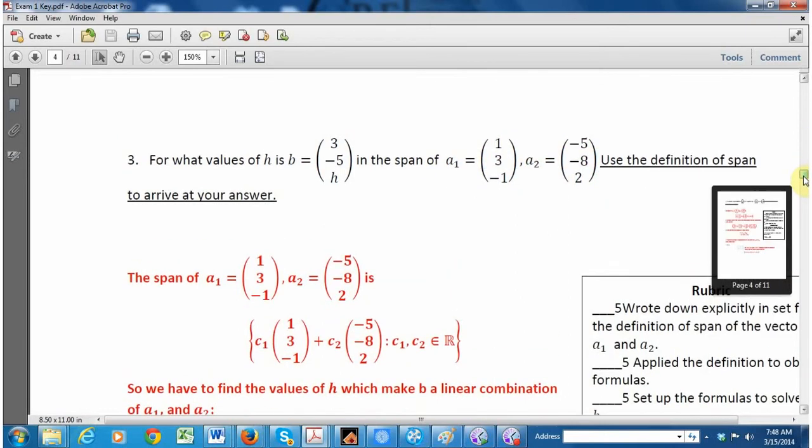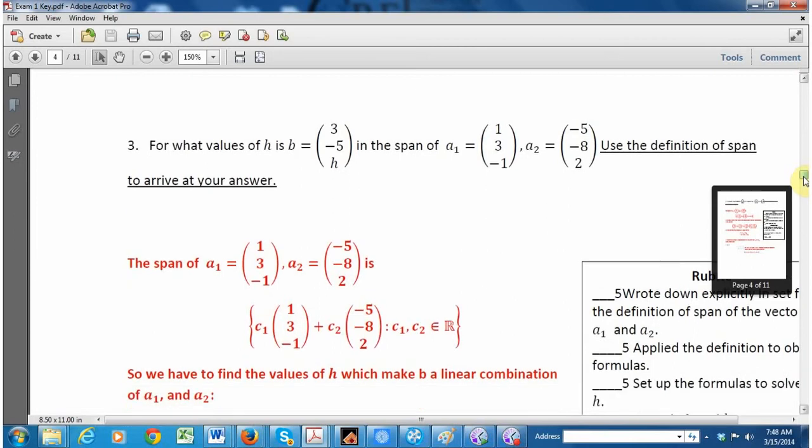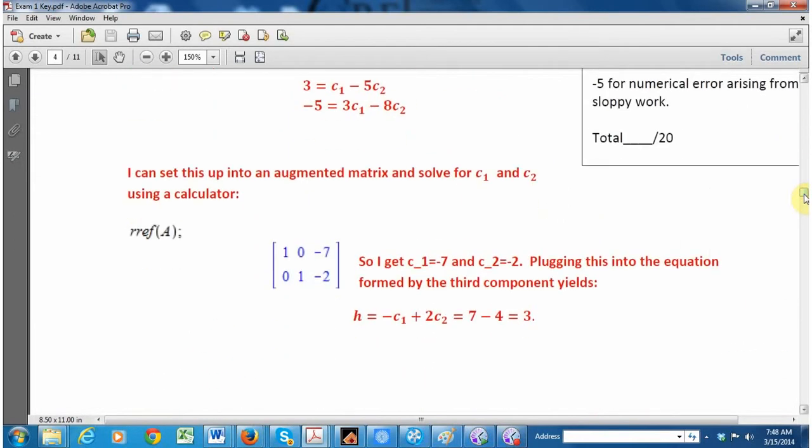One way you could do this problem is to memorize from the back of the book that you have to make a matrix like the following one down below and row reduce it, or actually come up with this matrix, row reduce it, and find the answer that way. But that doesn't really demonstrate that you know what's going on.